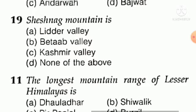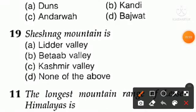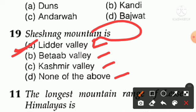Moving to question number 19 briefly: Sheshnag mountain — option A is leather valley, option B is beta valley, option C is Kashmir Valley, option D is none of the above. Sheshnag mountain is in Lidder Valley — option A is right. Sheshnag mountain is in Lidder Valley.